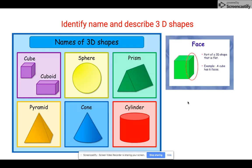It's a cylinder. Here are some names of the 3D shapes we've just looked at. When you describe your 3D shape, I want you to think about how many faces your 3D shape has. Here's an example in the top corner of a cube, which is this shape over here. Part of a 3D shape that is flat is the face.